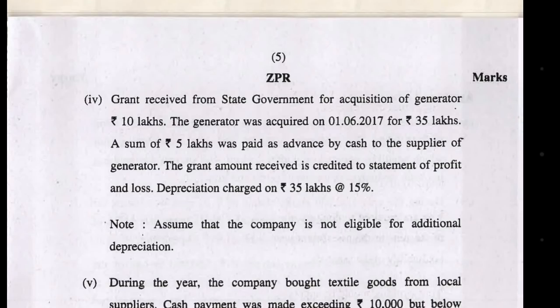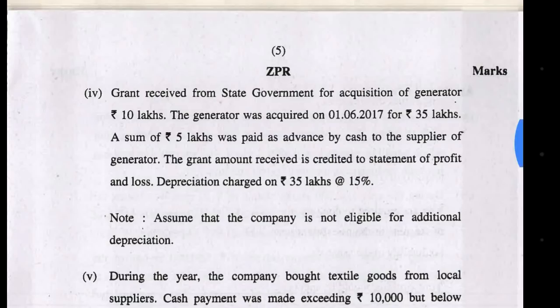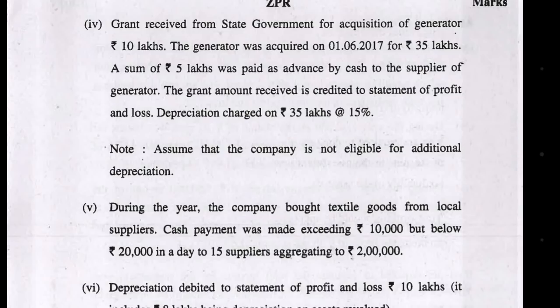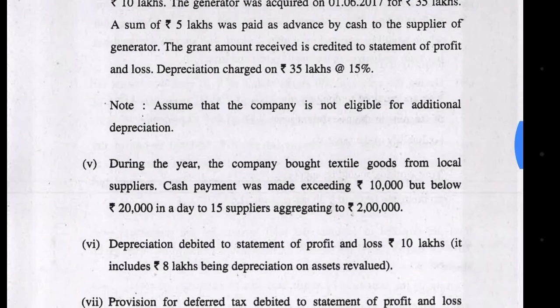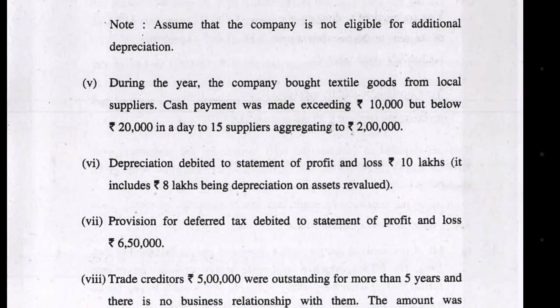Grant received for generator — 10 lakh grant received, which is not being deducted. You should deduct it because a government grant received for a specified asset must be reduced from the asset's value. The depreciation impact will flow through accordingly. Fifth point: any payment in the textile business exceeding 10,000 rupees in cash — 2 lakh will be disallowed as expenditure. Depreciation will be debited; that impact will also be incorporated from the government grant above.